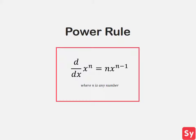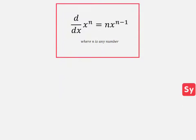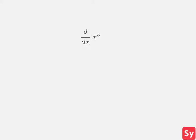Pretty simple. Let's see some examples now. First example, we want to compute the derivative of x to the 4th. Let's take a look at the rule to remember how to compute this.